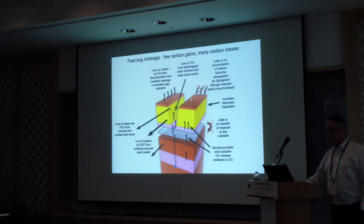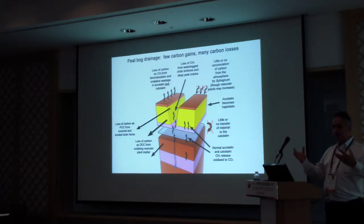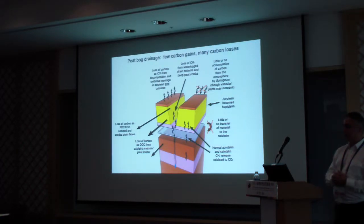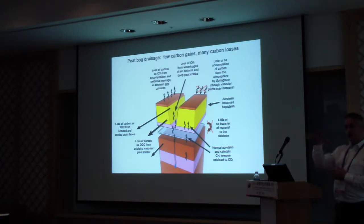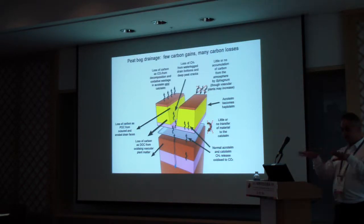One of the questions that often comes up is about methane. A lot of people are aware that methane comes out of a healthy, natural peatland — it's part of the deep-down breakdown of the peat. In a very healthy peatland with a lot of sphagnum on the top, that methane is then oxidised again and doesn't get released as methane — it's kept in the system.